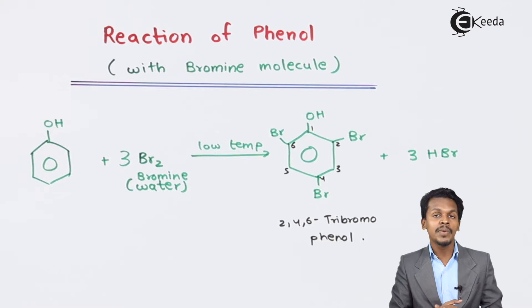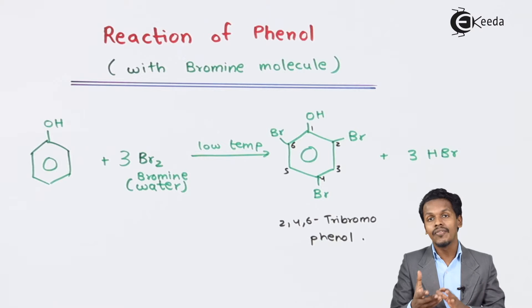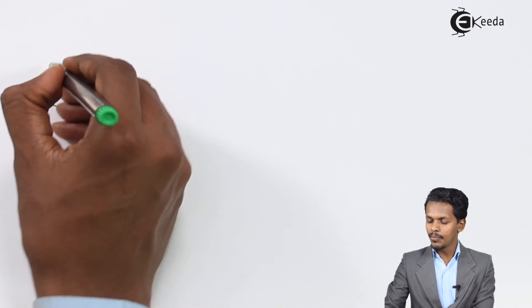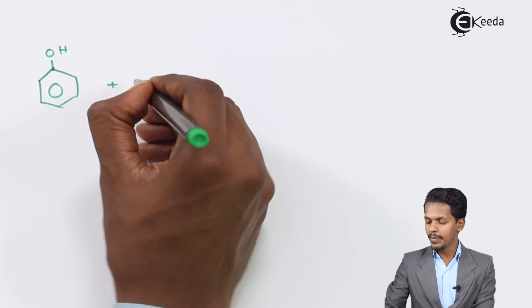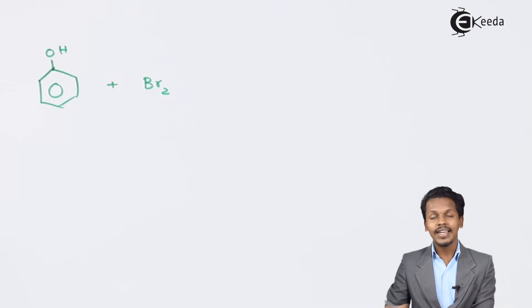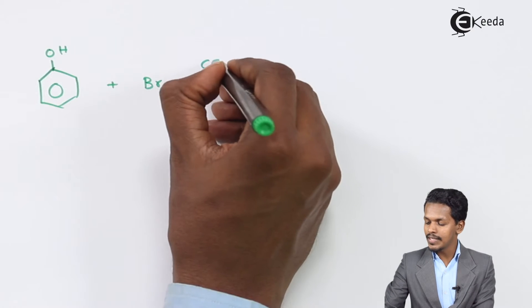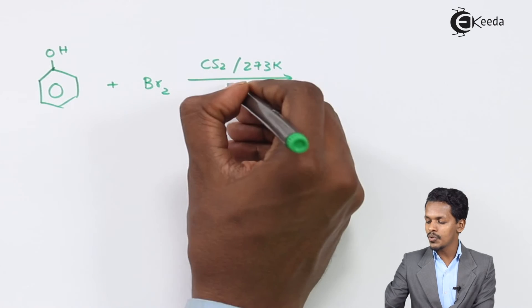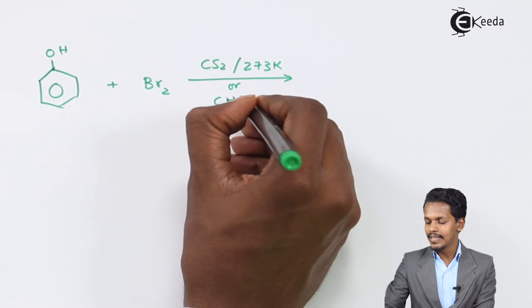But what happens if phenol is being treated with bromine molecule but in a different solvent? So suppose if phenol is treated with bromine molecule, but here the condition is different - we are using organic solvent, either we can use CS2 at lower temperature that is 273 Kelvin or we can also use the solvent chloroform, that is CHCl3.